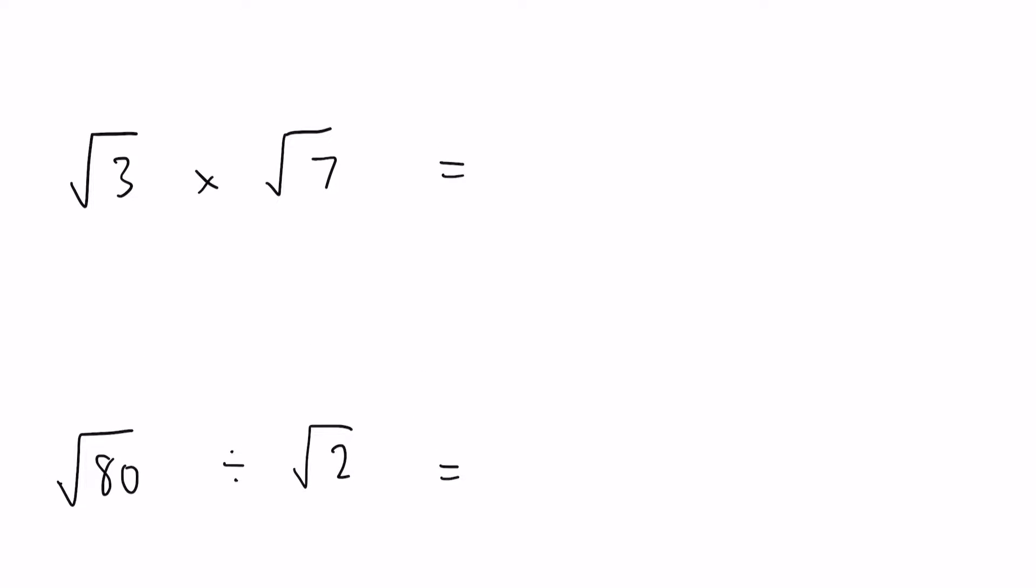So our first example here, the square root of 3 times by the square root of 7. So as you can see, 3 times 7, our final answer is going to be root 21.